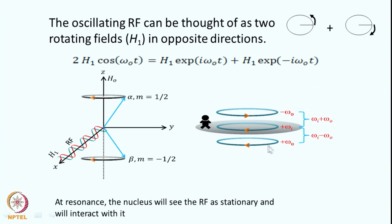Suppose I sit on one of the RF rotating components and look at the spin. I will see that the spins are precessing with frequency omega_I minus omega_0, since they are going in the same direction — the net frequency is the difference. If I sit on the other component going in the opposite direction, the net frequency is the addition of the two, which is in megahertz — the spins cannot interact with that field effectively. As the two frequencies come closer and closer, the difference becomes smaller, and when they are equal, that is called resonance.